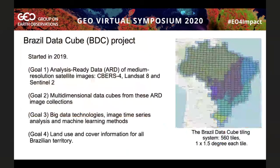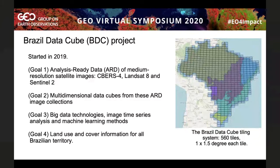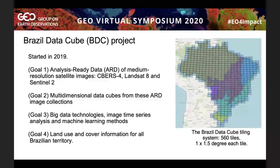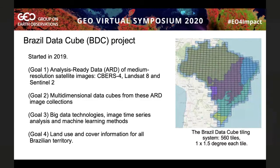The Brazil DataCube project started last year, in 2019, and the project has four main goals. The first goal is to create analysis-ready data of medium resolution images for all Brazilian region, including images from the satellite CBERS-4, Landsat 8, and Sentinel-2. The second goal is to create multidimensional data cubes from these image collections. The third goal is to develop and use big data technologies, machine learning methods, and image time series analysis to store, process, and extract information from these image collections and data cubes. And the last goal is to create land use and cover information for all Brazilian territory, using the image collections, data cubes, and methods developed in the project.